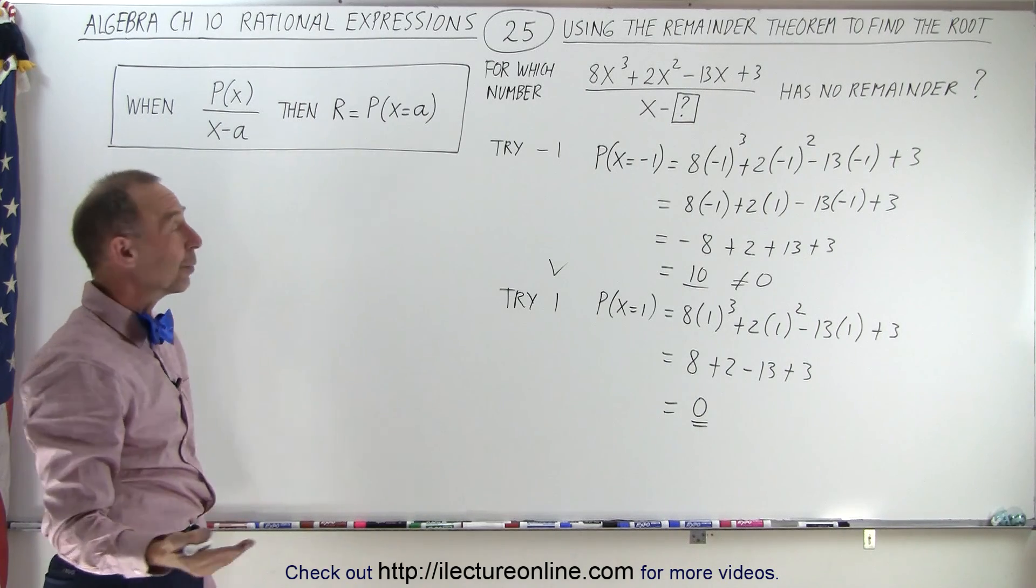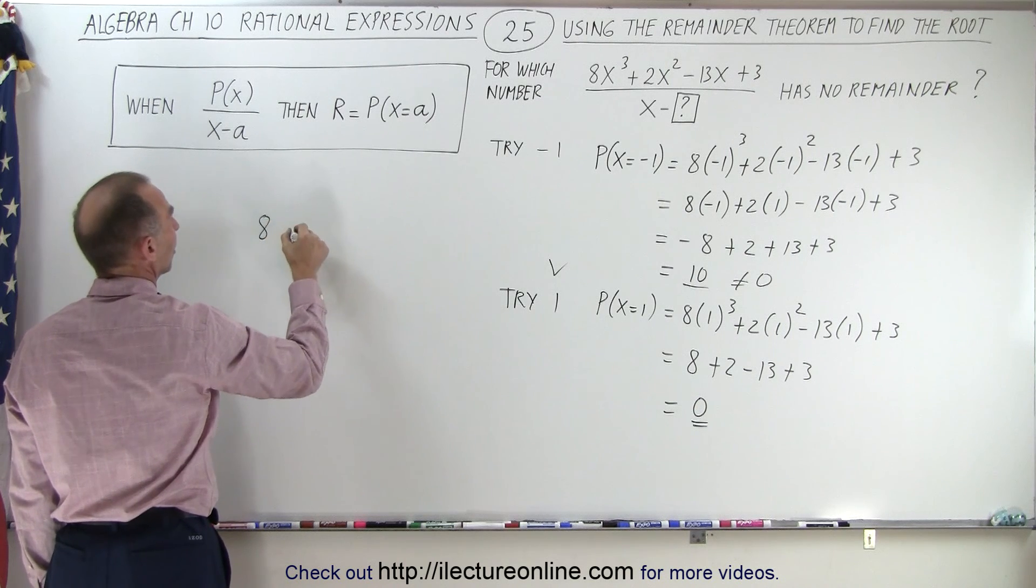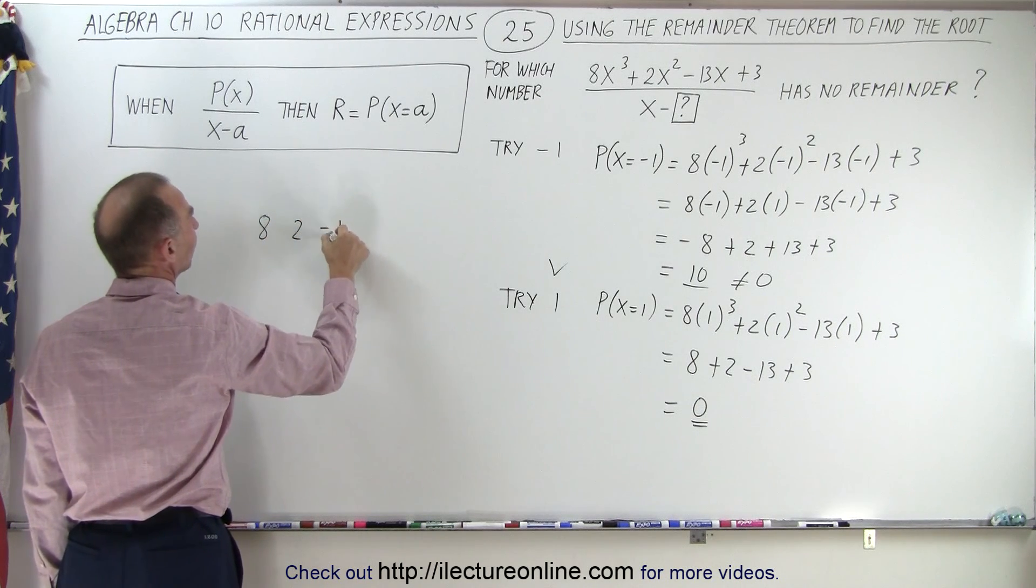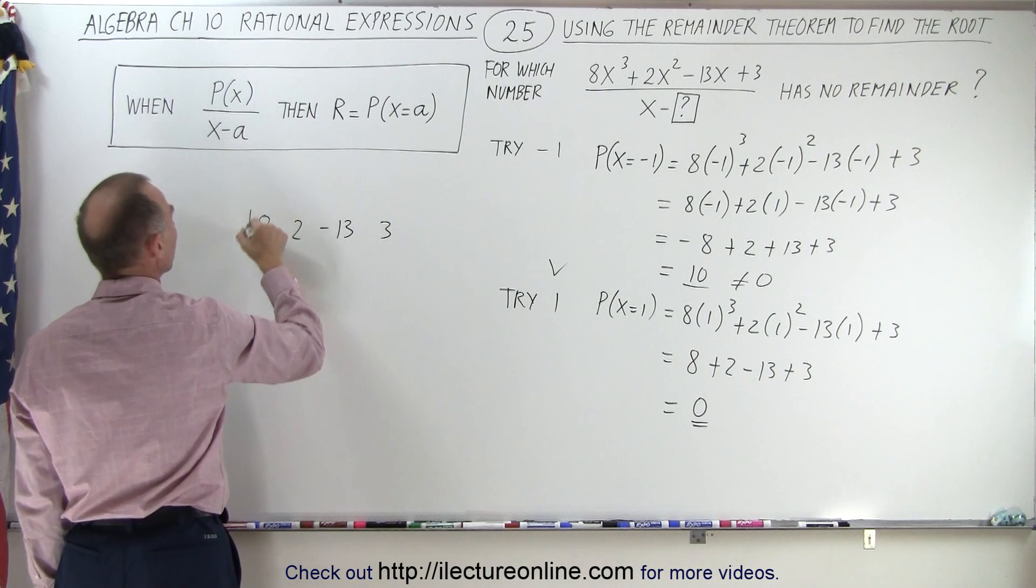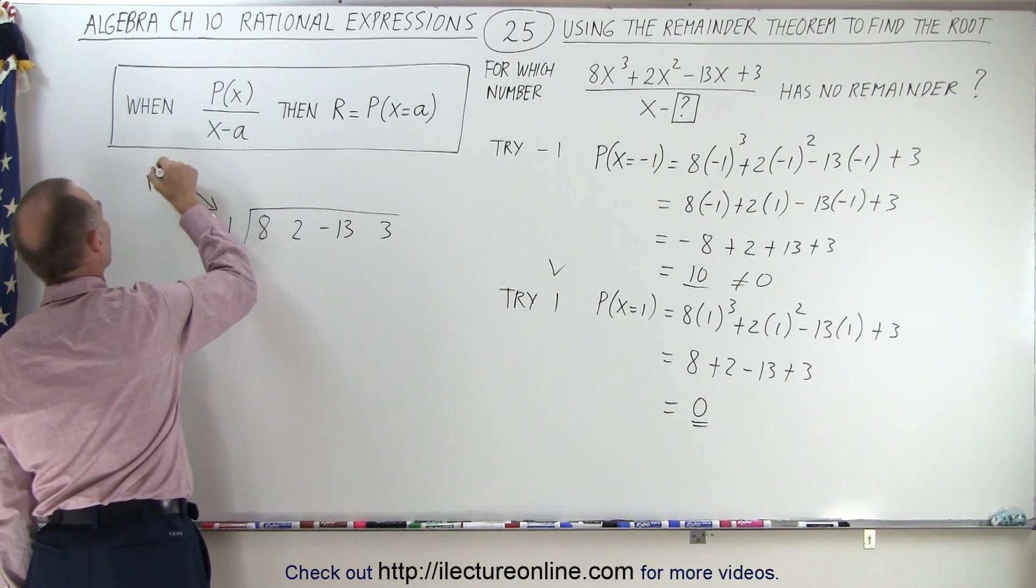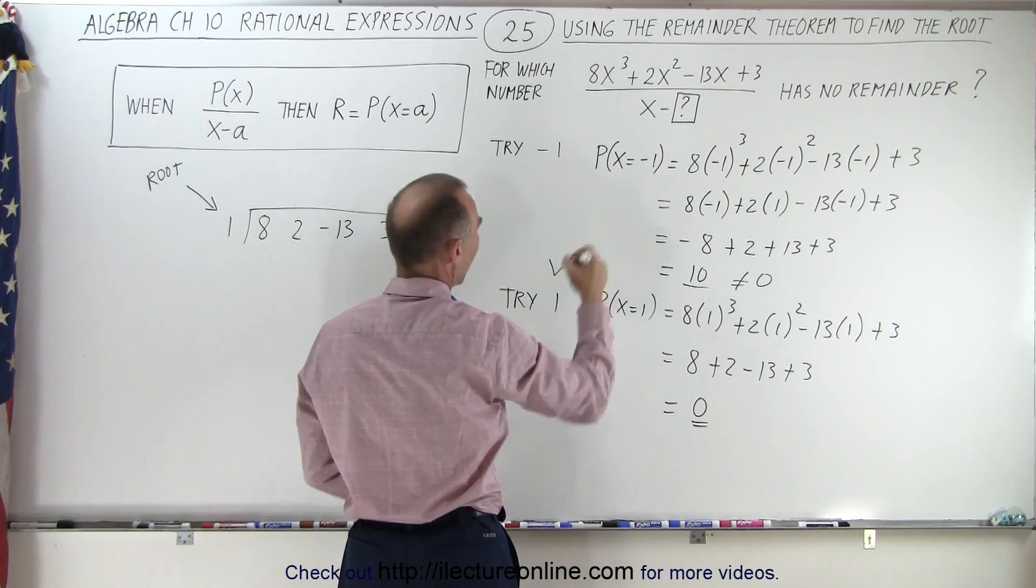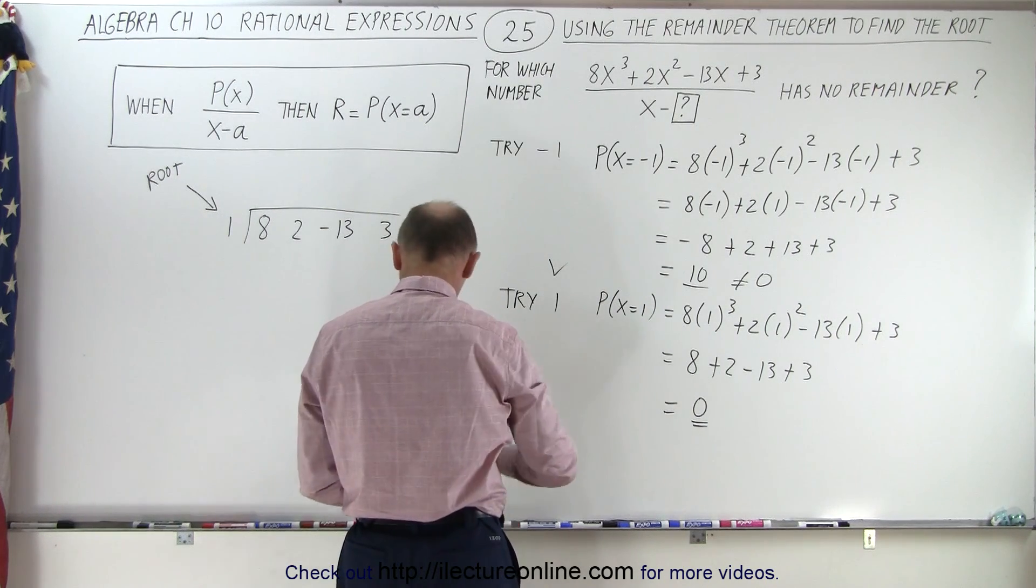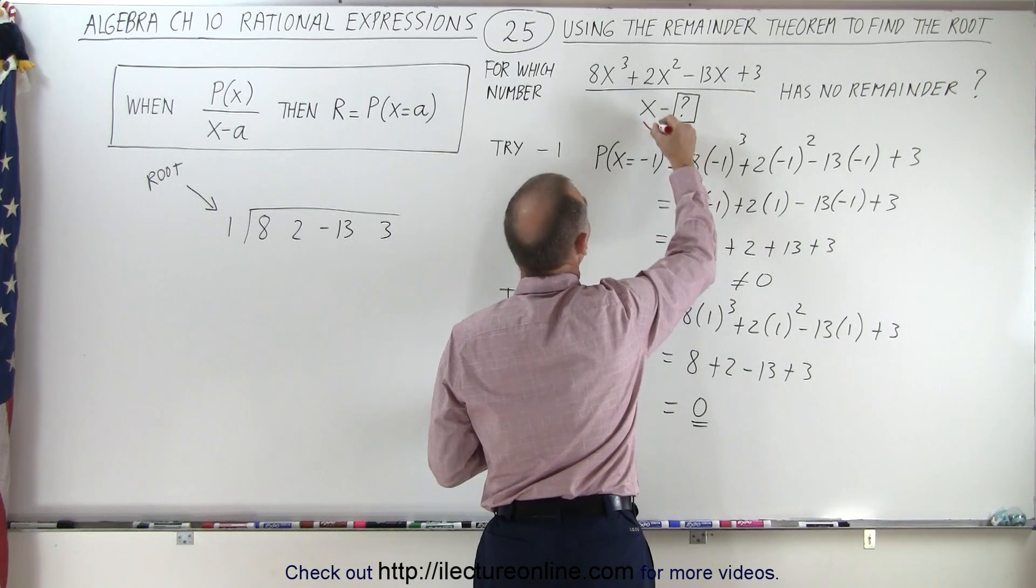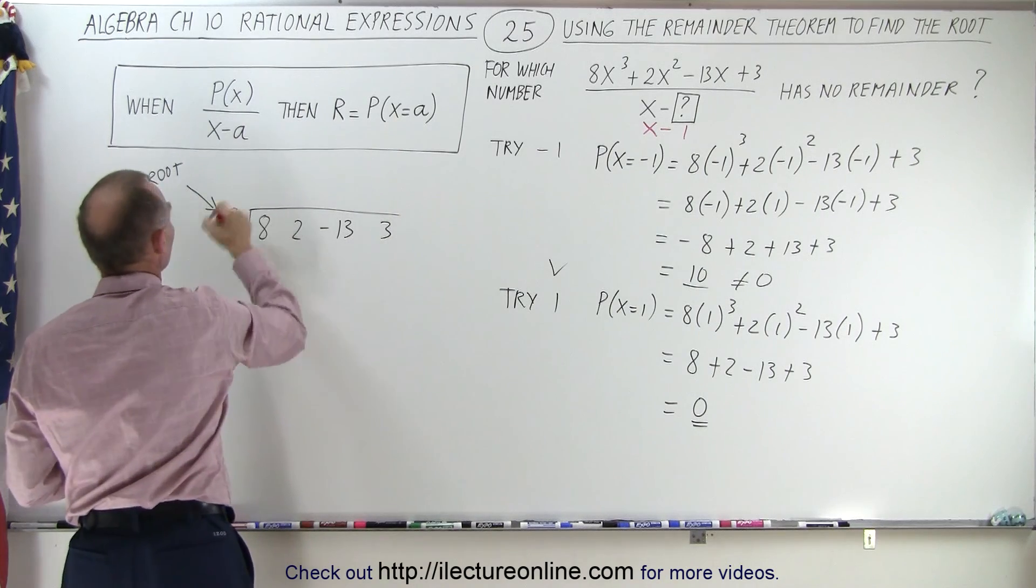Another way to evaluate that is to use a synthetic division. So let's go ahead and say 8, 2, negative 13, and 3. And now we're going to use the root here. Remember, this is the root. So when we have x minus 1 in the denominator, let's write that on. So we have x minus 1. So therefore, the root is equal to 1 right there.